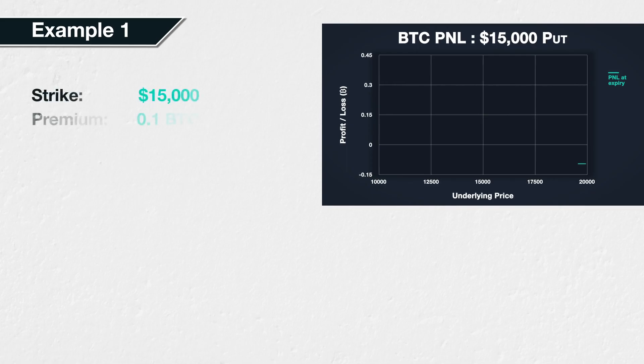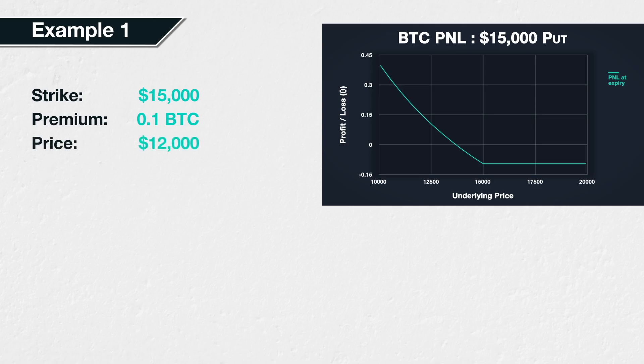Example 1. Suppose Bitcoin is currently trading at a price of $15,000. We expect the price to decrease, so we purchase a Bitcoin put option with a strike price of $15,000. The price of this put option is 0.1 BTC, which is 10% of a Bitcoin. At expiry, the price of Bitcoin has indeed decreased to $12,000, and we would like to calculate what our profit is.